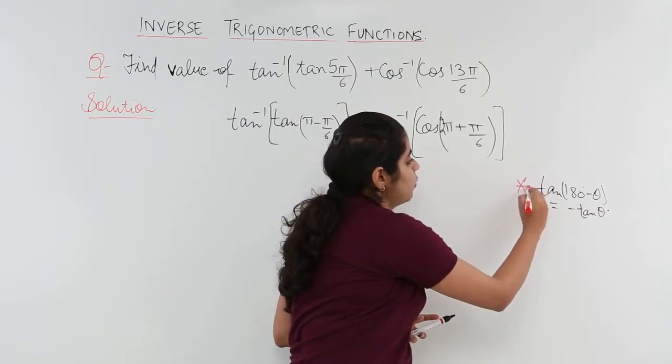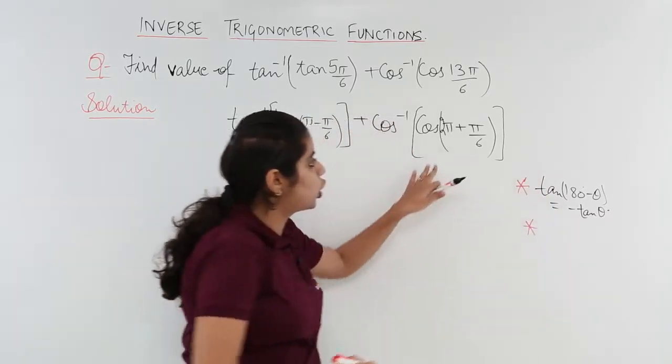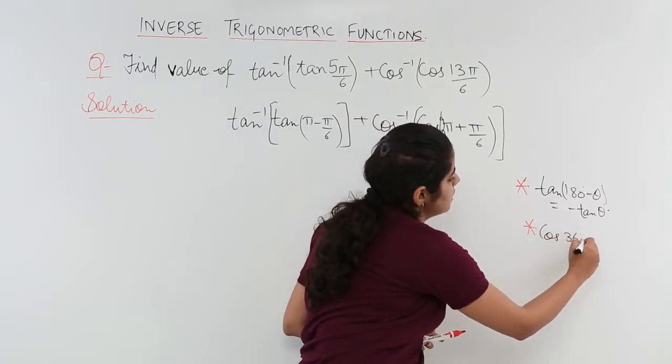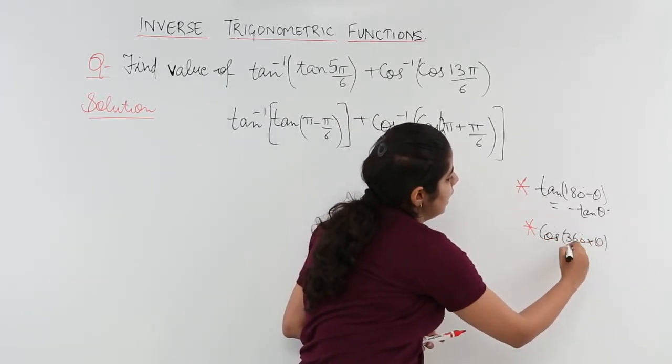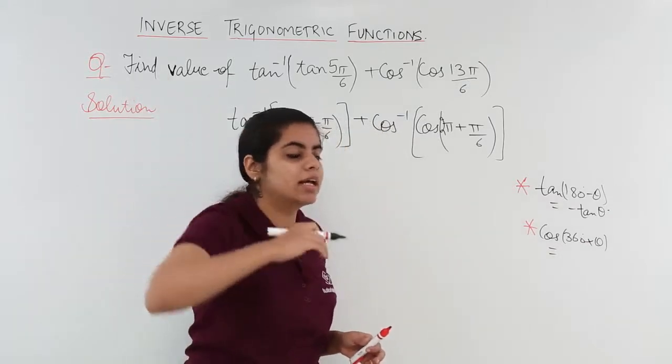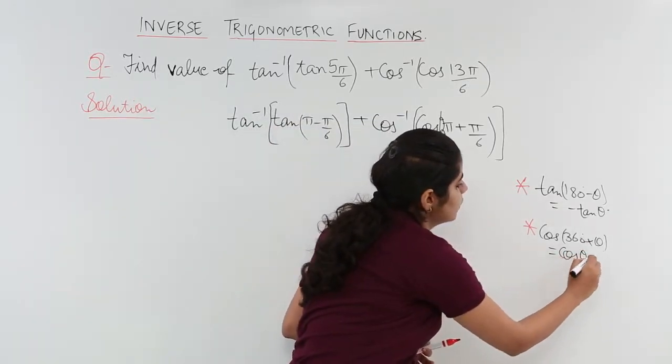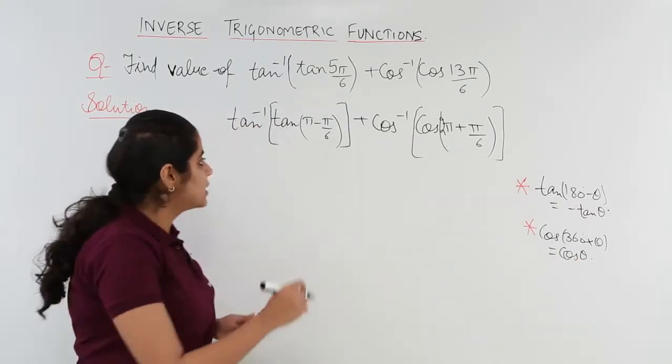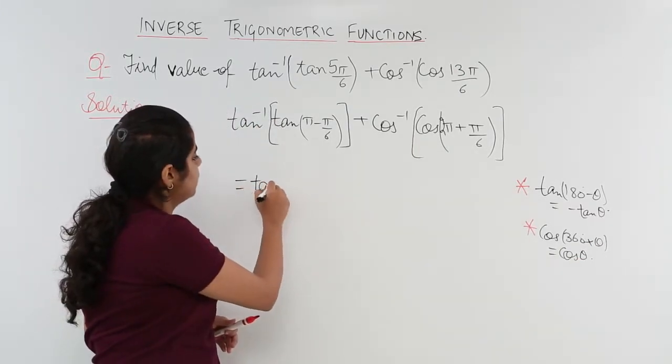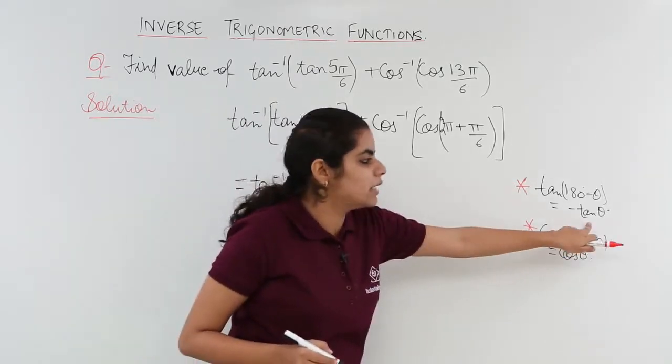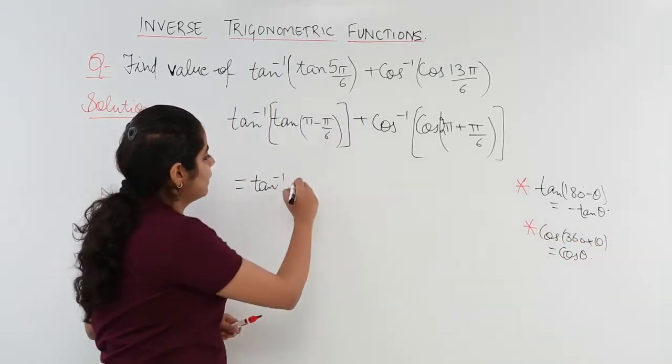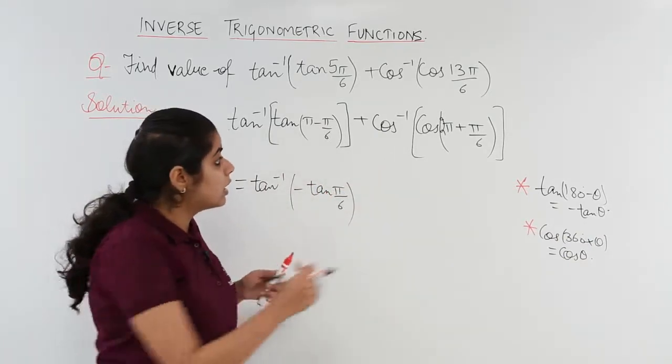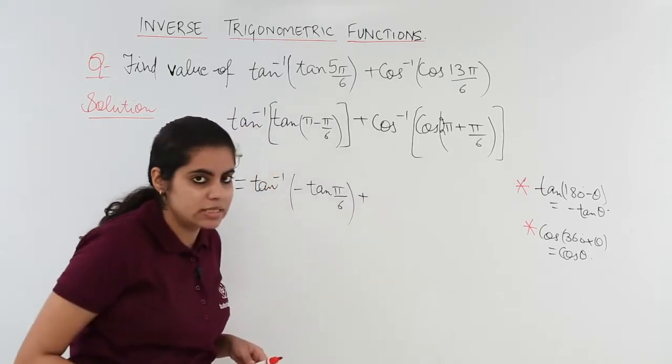It means the second quadrant and the second quadrant has tan as negative. So it is minus tan theta. And what about cos 360 plus theta? Cos 360 degree plus theta means the first quadrant again and first quadrant has everything as positive. So it is simply cos theta. Both these points are important and so we apply the knowledge.